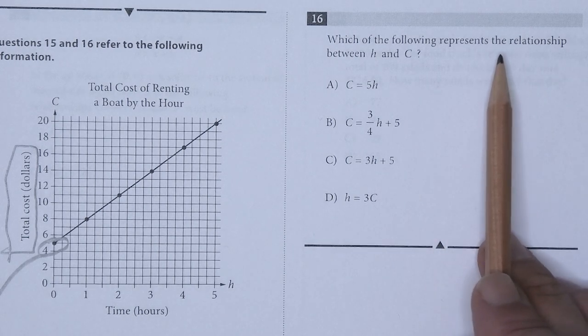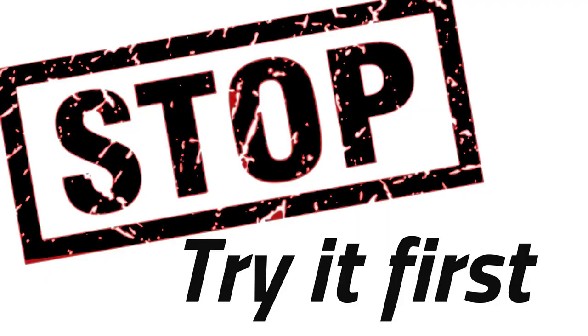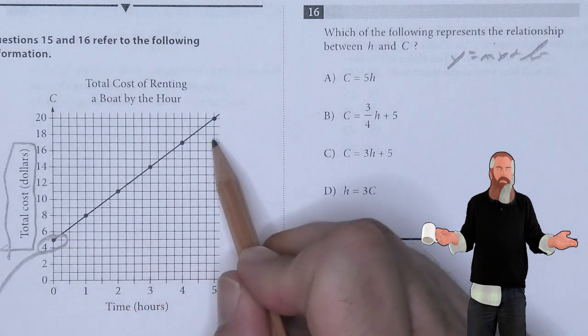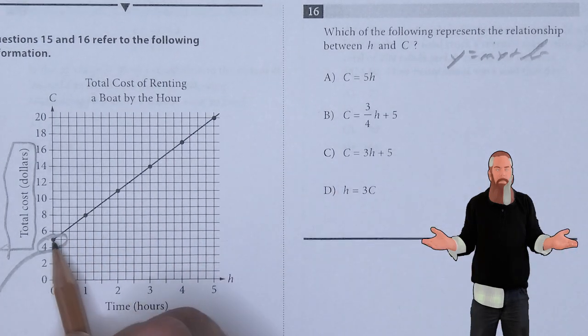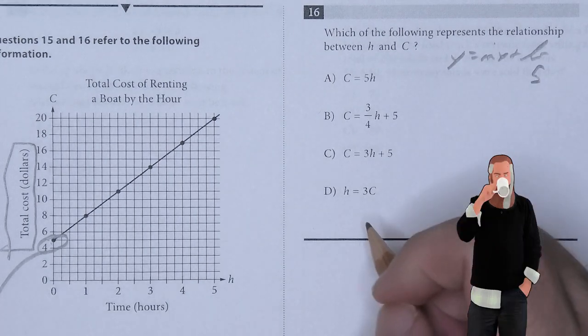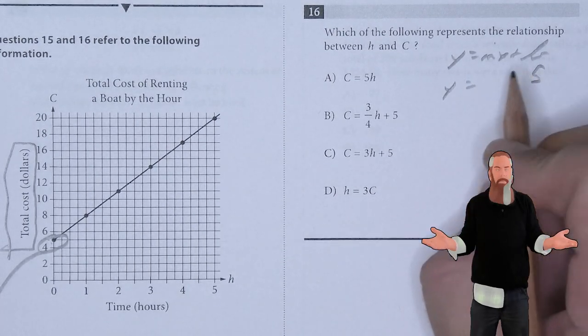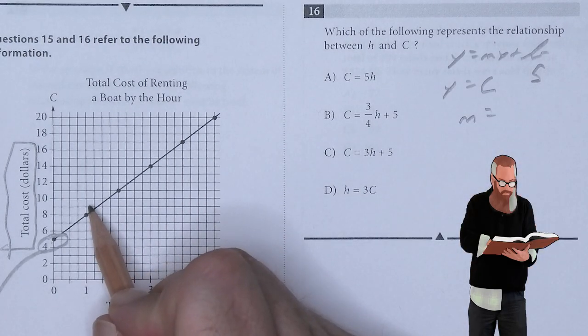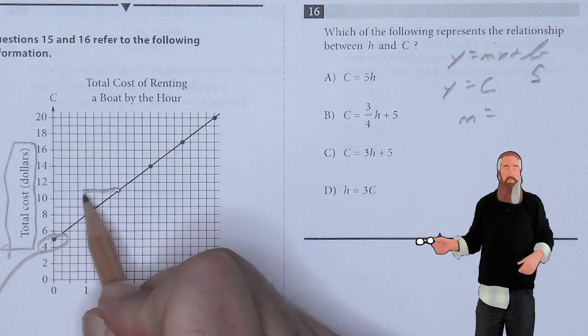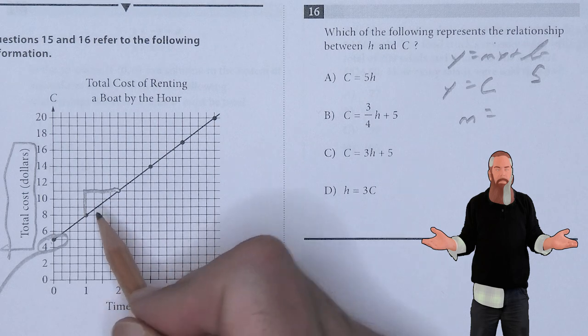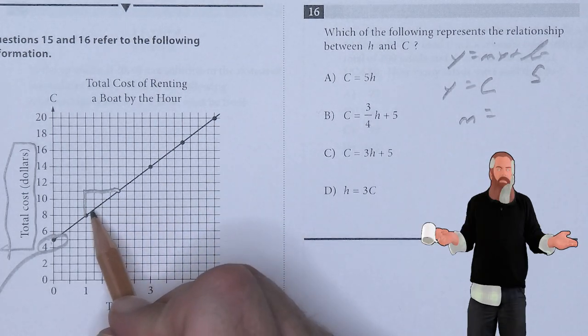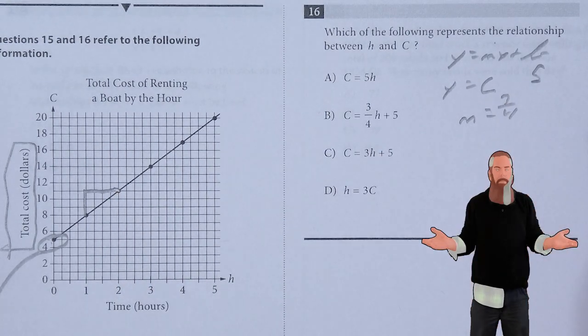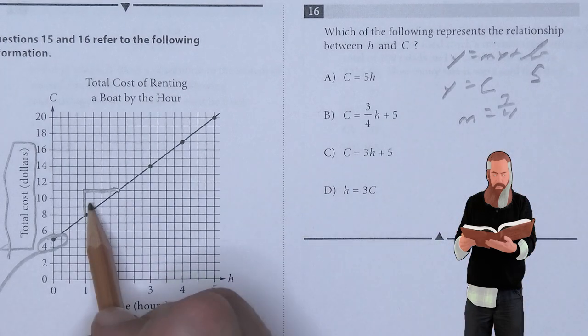Which of the following represents the relationship between h and c? We're considering the equation y equals mx plus b. I can see that b, its starting point, is 5. So y is equal to c, but I need to figure out what m is. If I use two points, I can see a rise of 3 and a run of 4. So m is 3 over 4.